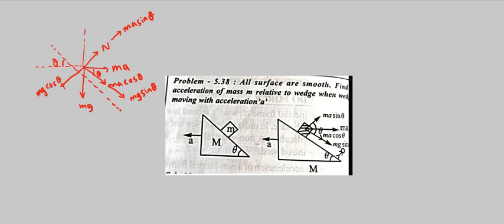Alright, so there are no forces in the uphill, so net force M into A prime along the inclined plane with respect to wedge, ma prime equal to how much? ma cosine theta plus MG sine theta.